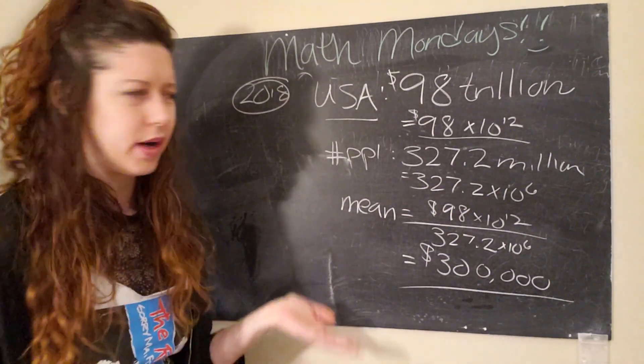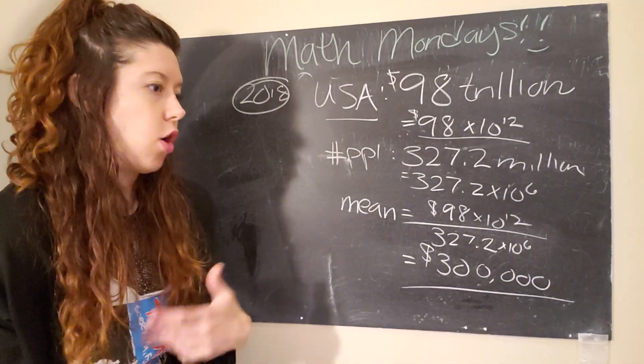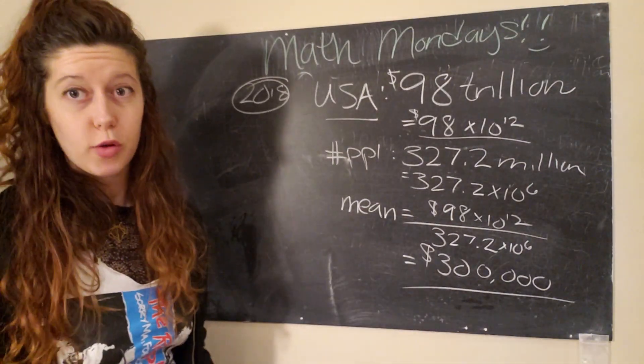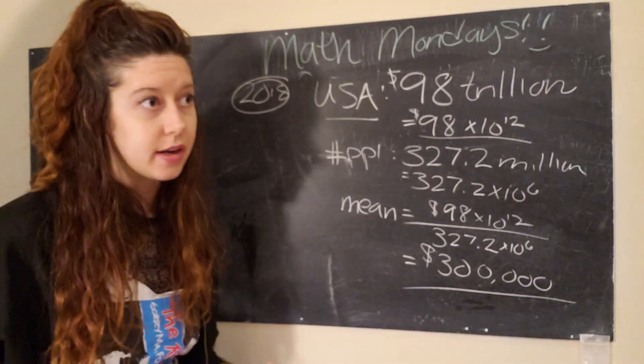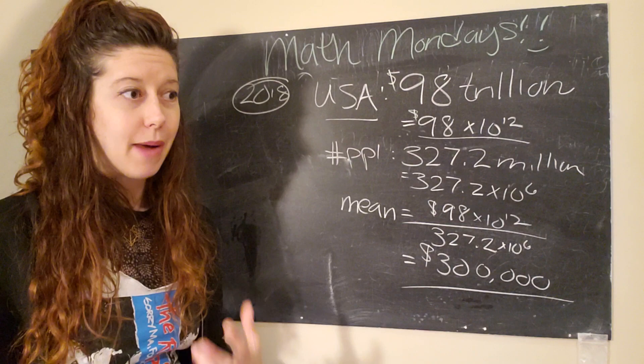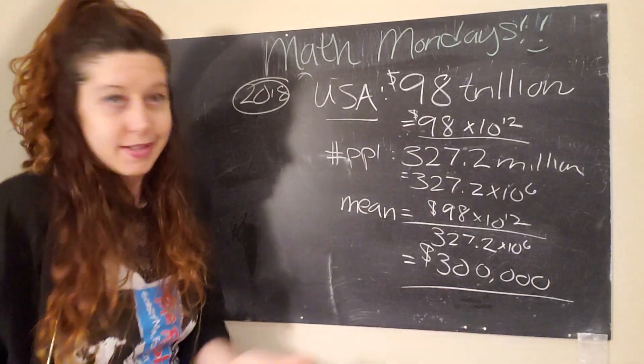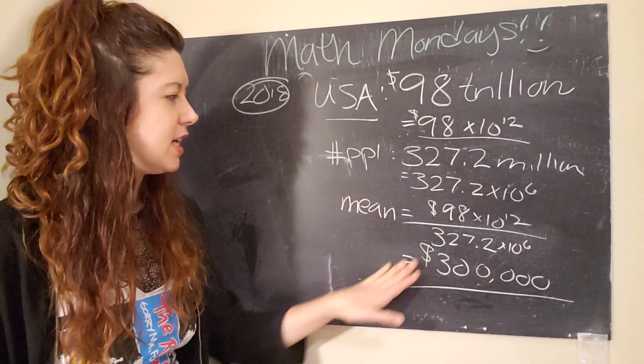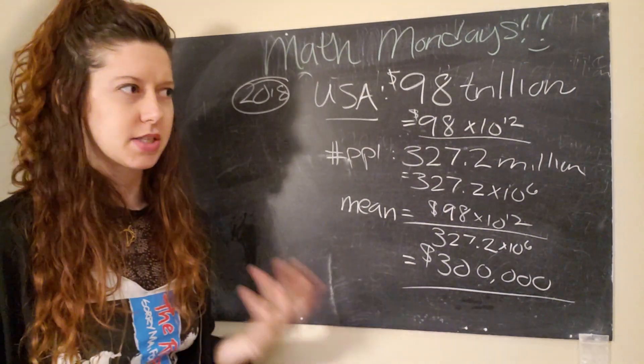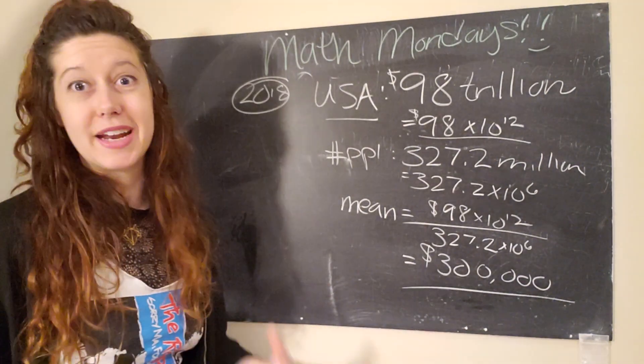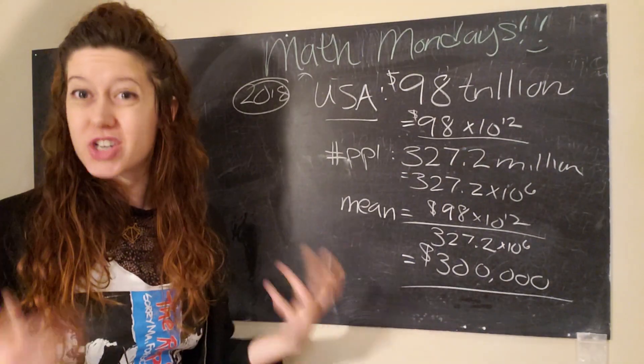And so, right off the bat, we can say, well, wait a second, what does this tell us? And the answer is, well, not that much actually, because in our society, in our economy, we do not distribute wealth equally. So, when we say that the total wealth of the United States of America is 98 trillion, it actually doesn't give us that much information about the individual wealth of an American person because it's not distributed evenly. And so, to say that the mean wealth of an American is 300,000 is really kind of meaningless because it doesn't actually tell us about an actual person that exists in the United States.